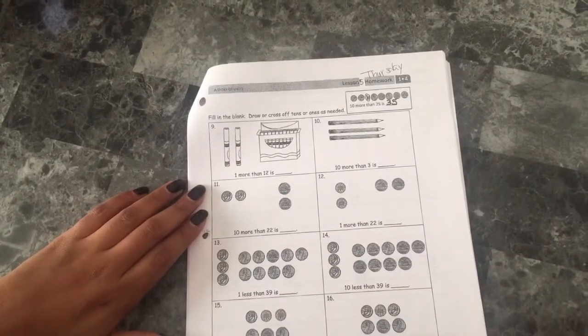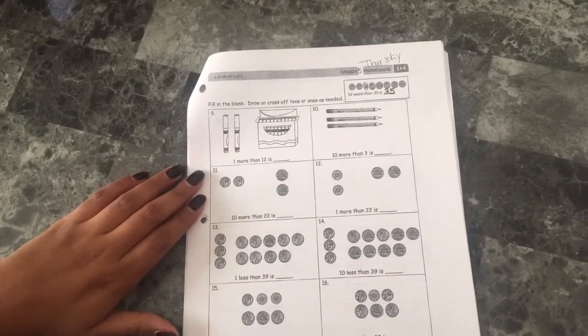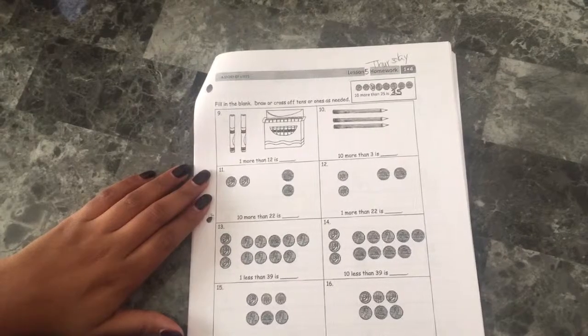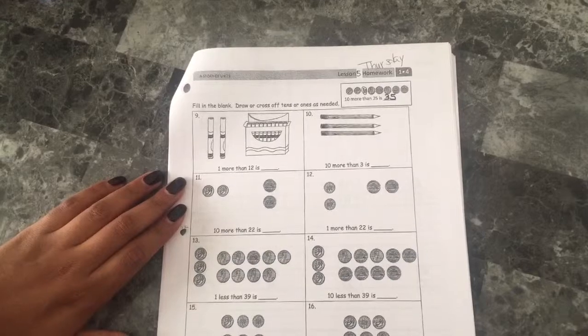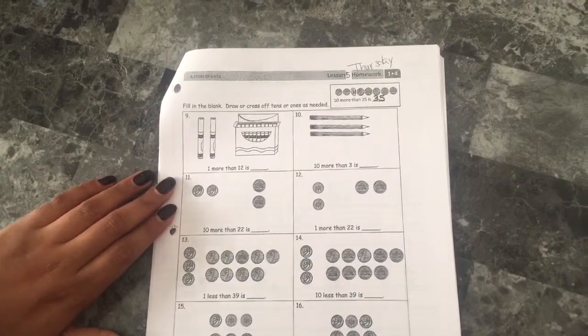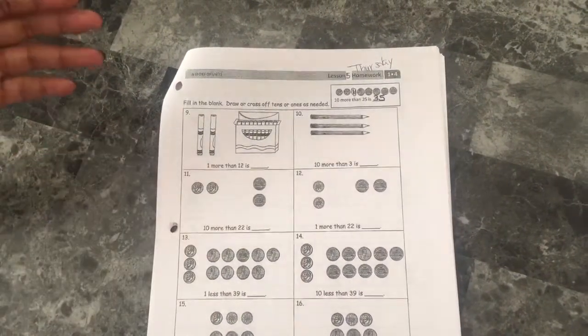Hi parents, again we're still working with tens and ones. Tonight's homework is using dimes and pennies though. The dimes are representing tens and the pennies are representing ones. Not only is this helping with place value and tens and ones, but it's also helping them learn how to count money.